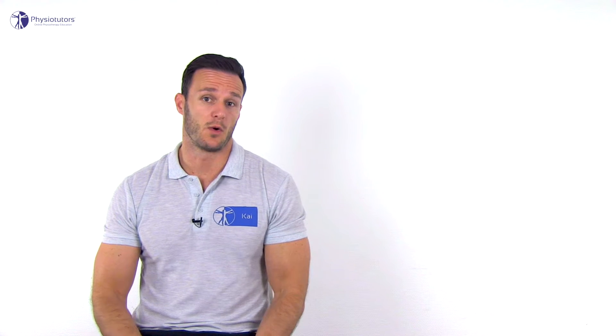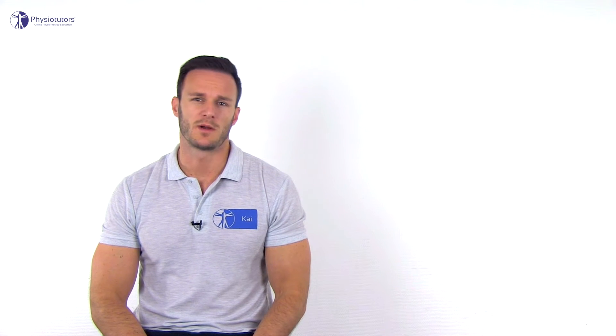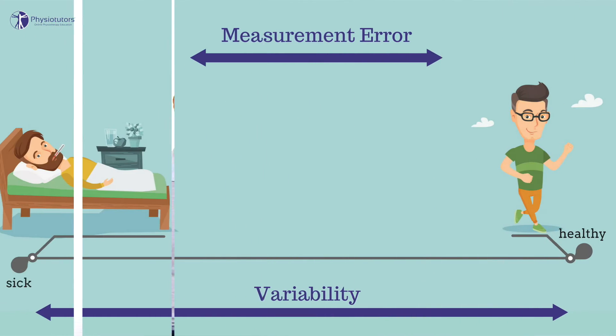If my goal is to distinguish two patients from each other — for example, if I want to know which person is sick and which one is not — I will have to use a measurement tool with a high degree of reliability. Reliability always depends on the variability amongst the persons to be tested. One can imagine that it is easier to distinguish between patients who look very sick from persons who look pretty healthy just by looking at them.